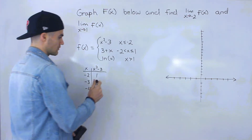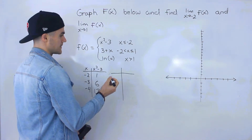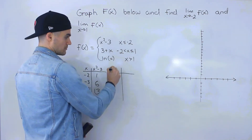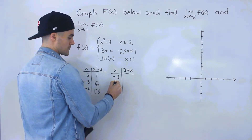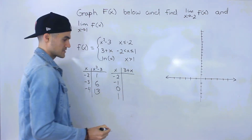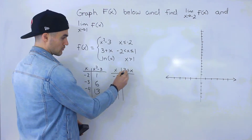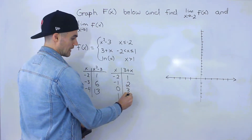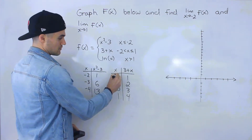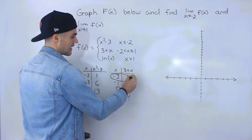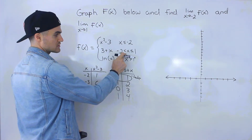For the next function, 3 + x, defined between negative two and positive one, I'll use x = -2, -1, 0, and 1. Plugging in: 3 + (-2) = 1, 3 + (-1) = 2, 3 + 0 = 3, 3 + 1 = 4. Notice this is just a line. Also, at x = -2, this point is going to be a hole, because this function is not defined there.